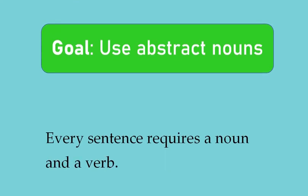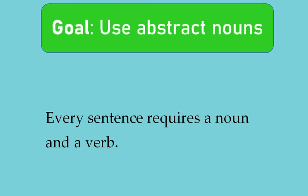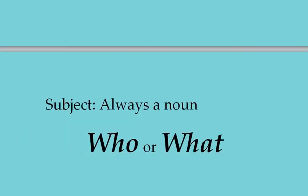As a reminder, nouns are incredibly important because every sentence requires a noun and a verb. These are two of the eight parts of speech that absolutely must be present in order for a sentence to be complete. So abstract nouns are a type of noun, and nouns are absolutely critical for a sentence. The subject of a sentence is always going to be a noun — the subject is who or what the sentence is about, and that is the main role a noun can play.